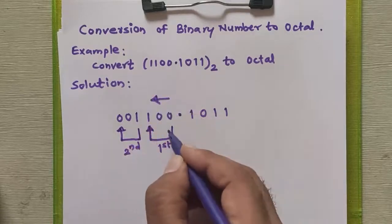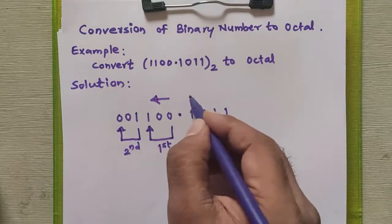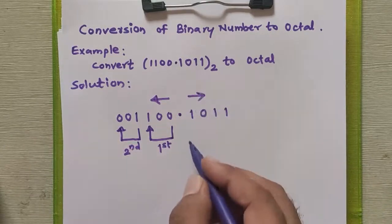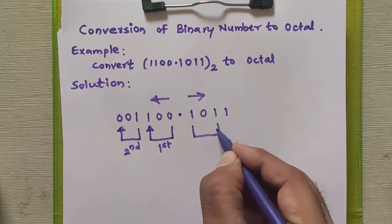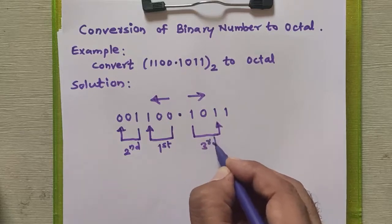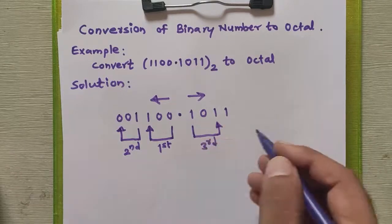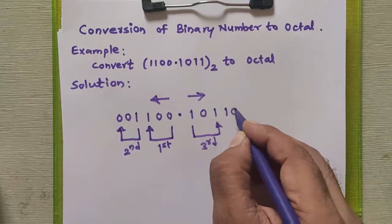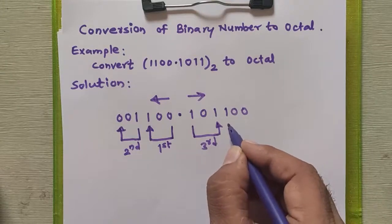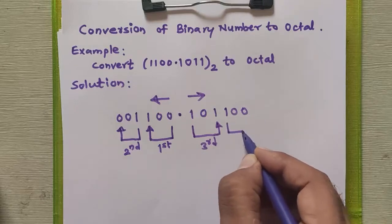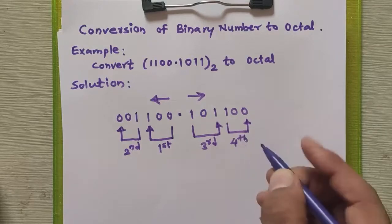For the integral part, we start grouping from right to left, and for the fractional part, we start grouping from left to right. This gives us our third group of three binary bits. For any single remaining bit after the decimal point, we can add two zeros after it to form a group of three binary bits, since appending zeros after the fractional digits does not change the value. This is the fourth group.